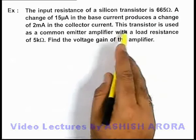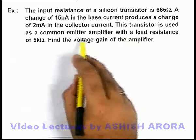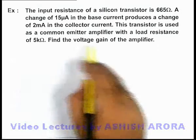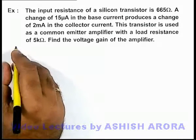We are given that this transistor is used as a common emitter amplifier with a load resistance of 5 kilo ohms, and we are required to find the voltage gain of the amplifier.